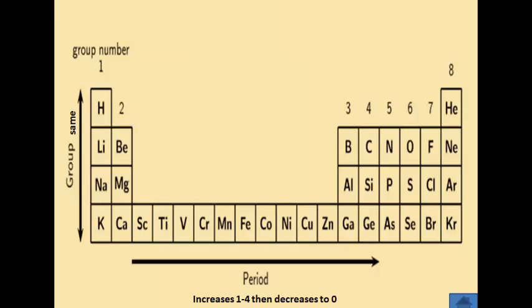To summarize: moving from left to right across a period, valency first increases from 1 to 4 and then decreases to 0. So elements in the same period have different valencies, but elements in the same group have the same valency.